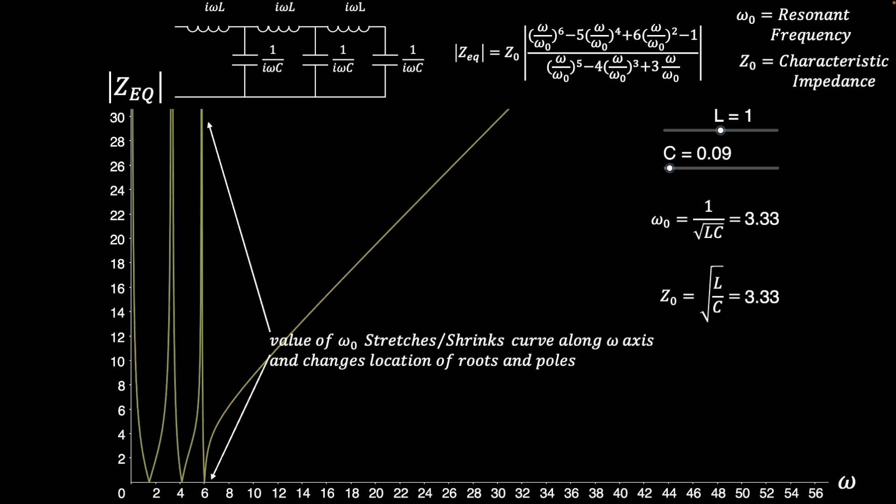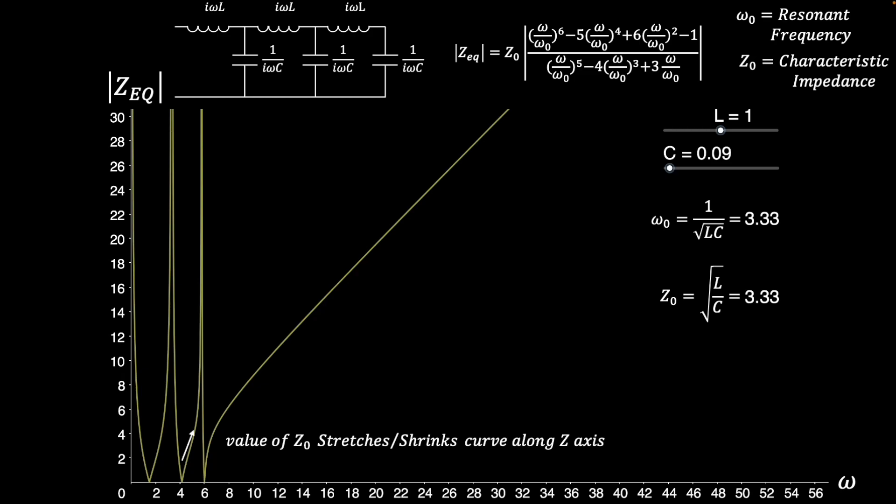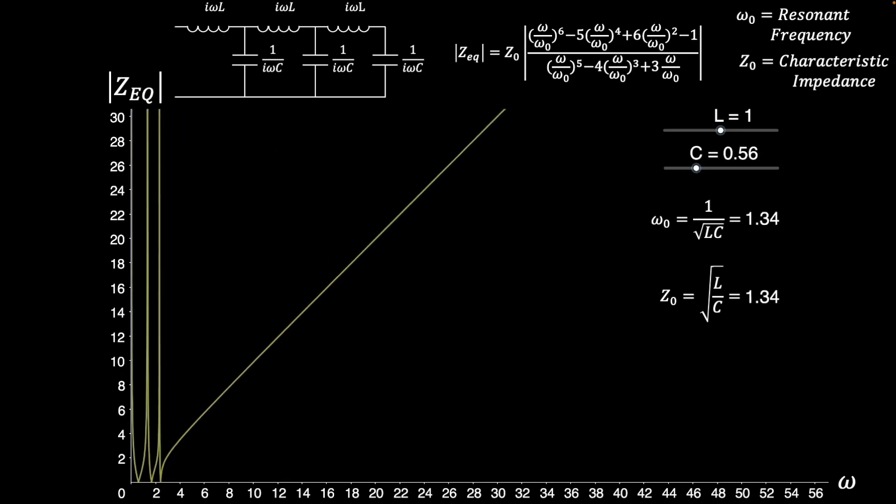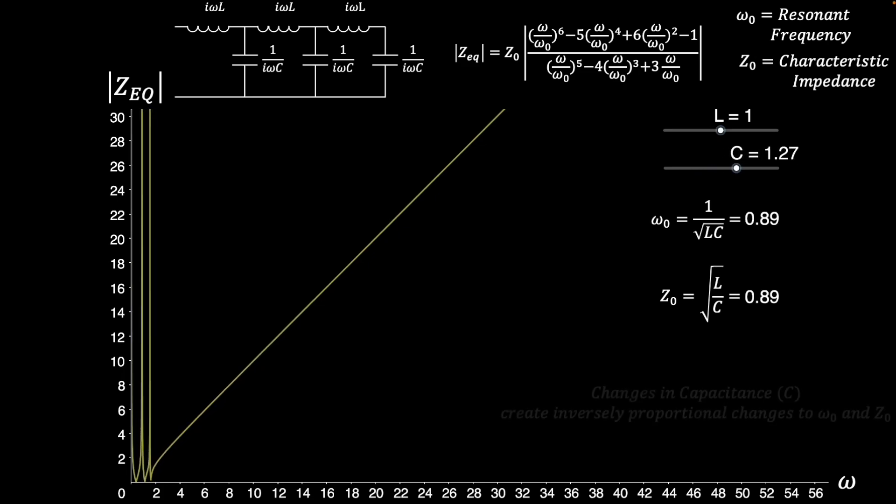The value of the resonant frequency stretches or shrinks the curve along the frequency axis, which changes the locations of the roots and poles, or the places where the impedance equals zero or infinity. The value of the characteristic impedance stretches or shrinks the curve along the impedance axis, but doesn't affect the location of the roots or poles. Ultimately, changing C alone creates an inversely proportional change to both the resonant frequency and characteristic impedance.